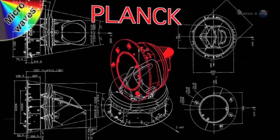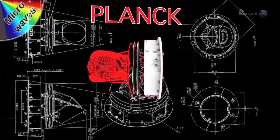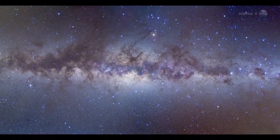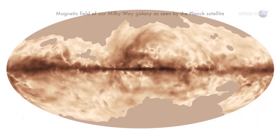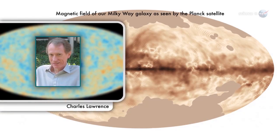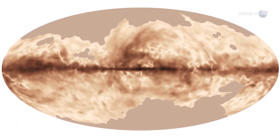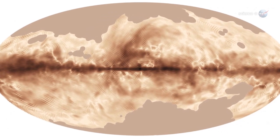Researchers working with data from the European Space Agency's Planck spacecraft have mapped the magnetic field of the entire galaxy. The Milky Way's magnetic field stretches across more than 100,000 light-years, says Charles Lawrence, the U.S. Planck project scientist at NASA's Jet Propulsion Laboratory. And Planck has done a magnificent job mapping its structure.